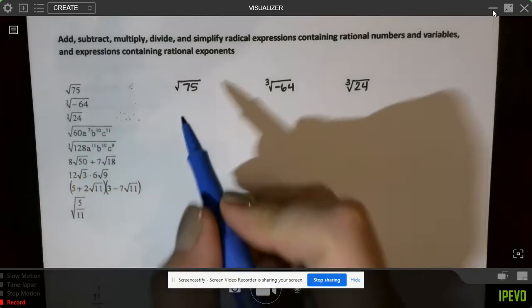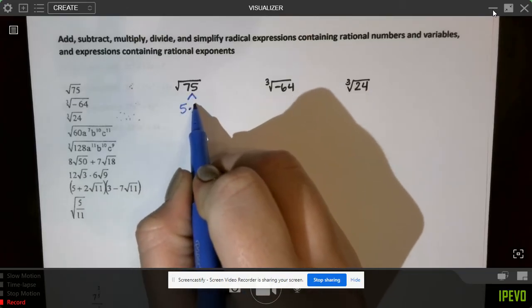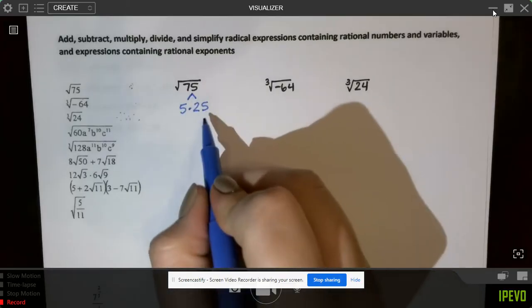The first thing we want to do is break down our number into the factors. So I noticed right away we can divide 75 by 5, and that's 5 times 25.